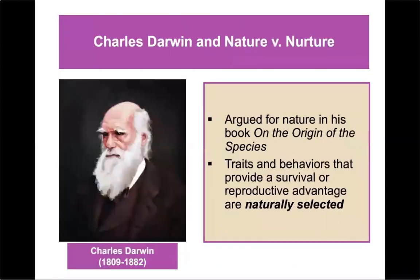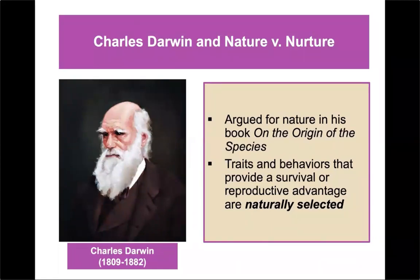Charles Darwin and nature versus nurture: Darwin's famous research on the theory of evolution argued for nature in his book On the Origin of Species. To him, traits and behaviors that provide a survival or reproductive advantage are naturally selected. If something is really adaptive for a particular species, it will be selected for over time, and you'll see more of that particular trait.